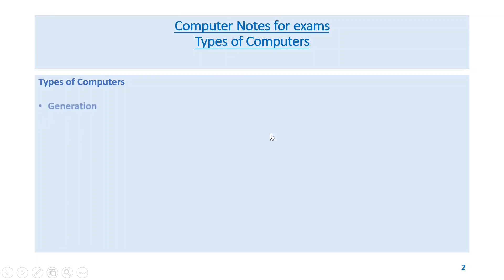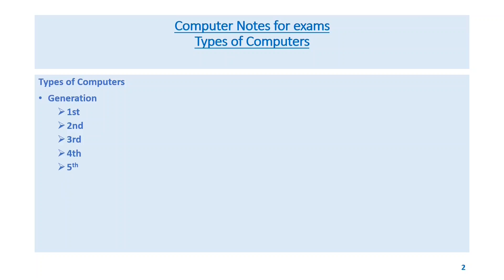Based on generation, computers are classified as first, second, third, fourth, and fifth generation computers. Based on purpose, computers can be classified as general purpose computers and special purpose computers.